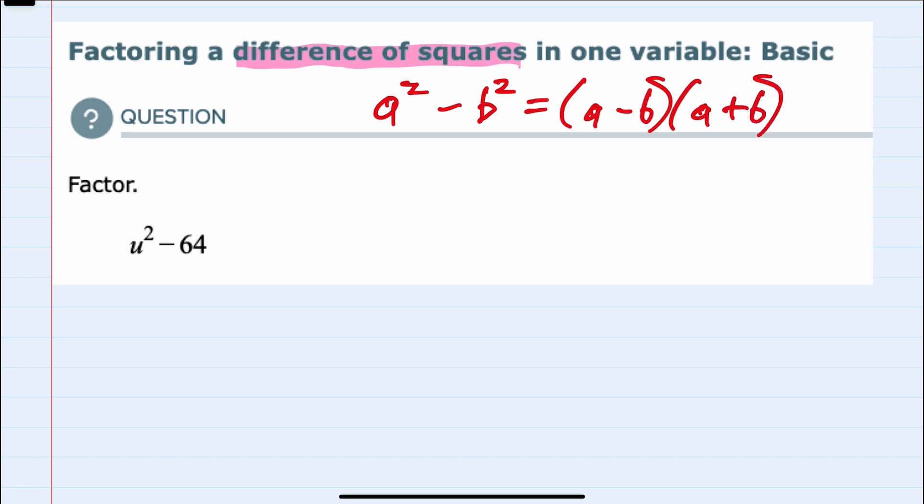Our expression here that we're asked to factor is u squared minus 64. And to use the difference of two squares, I want to write it as a term being squared minus another term being squared.